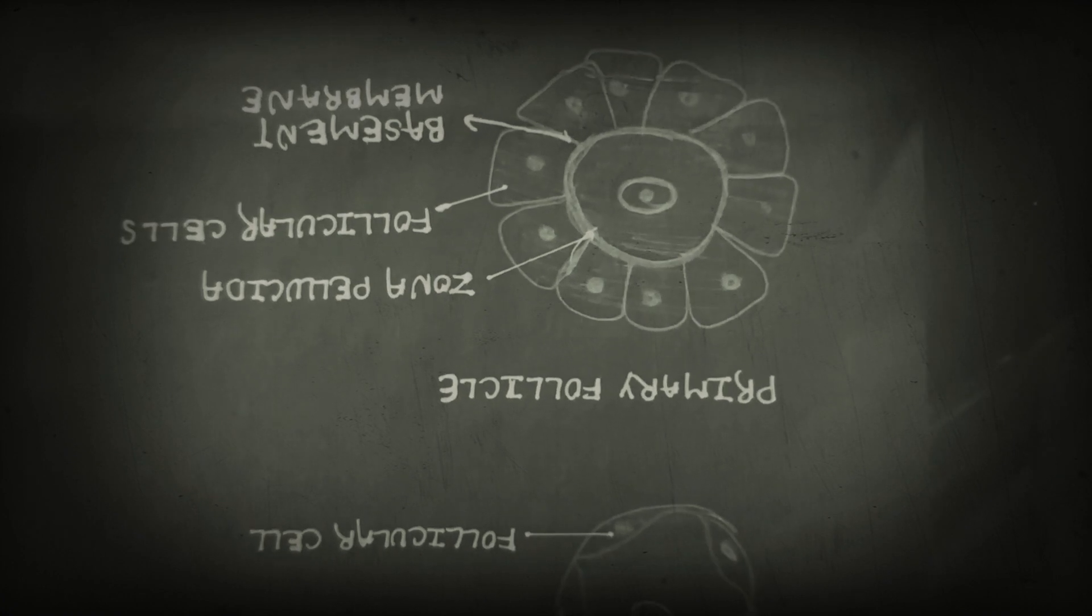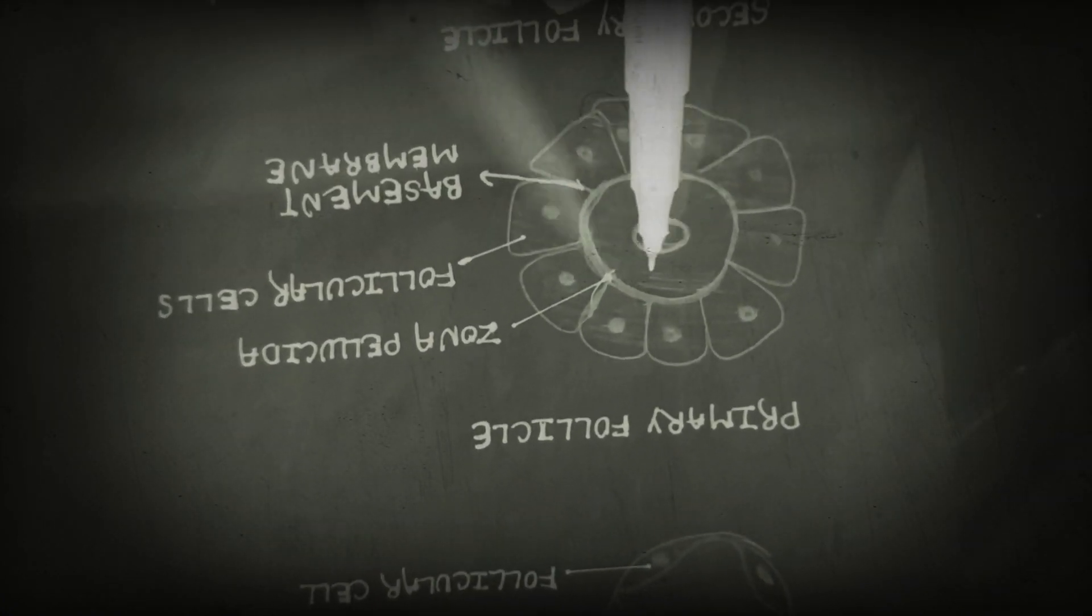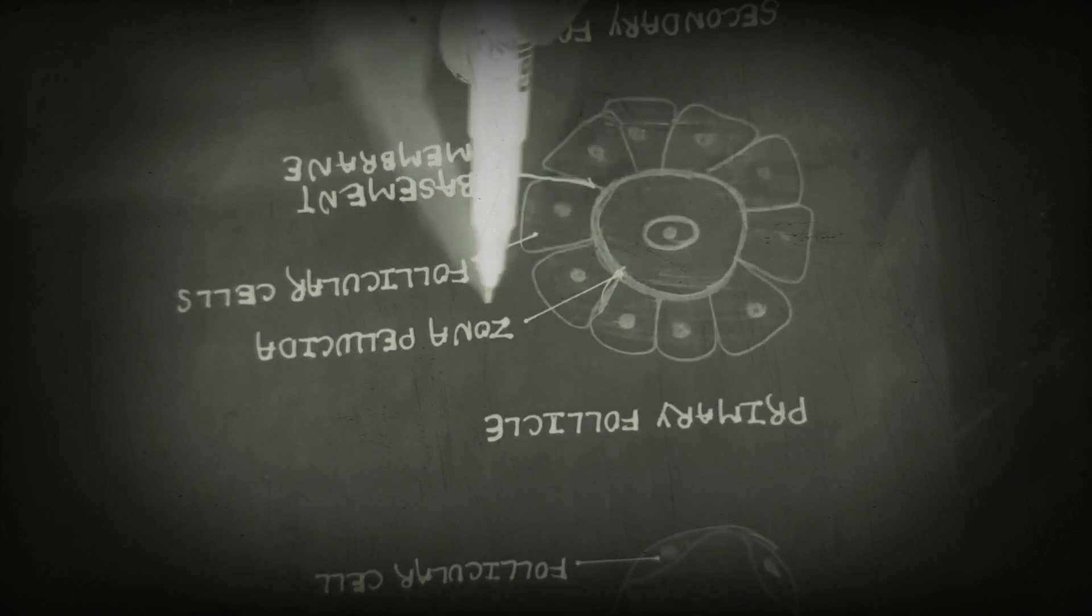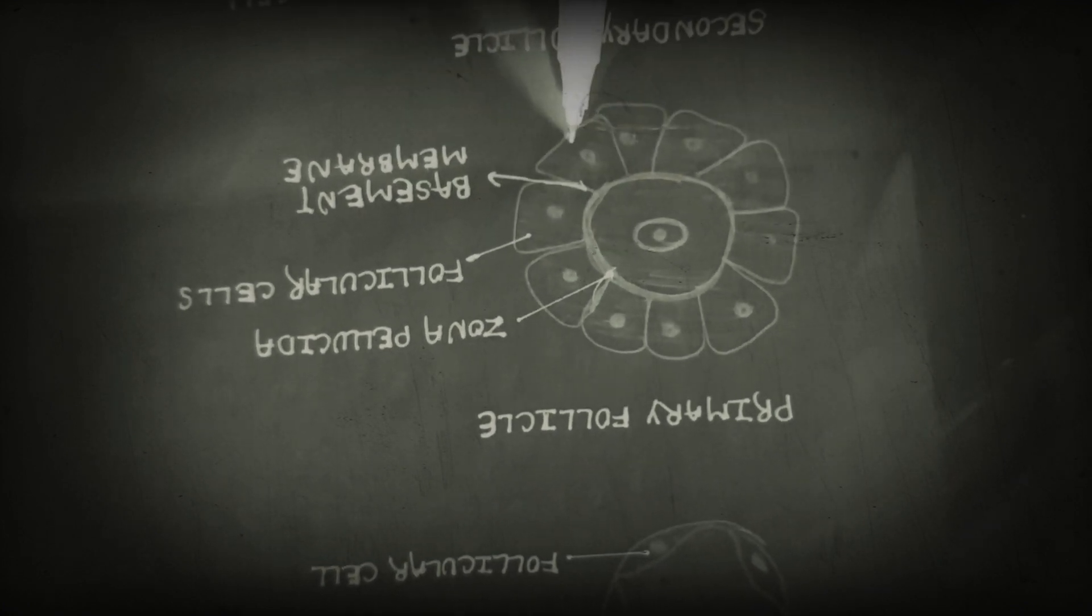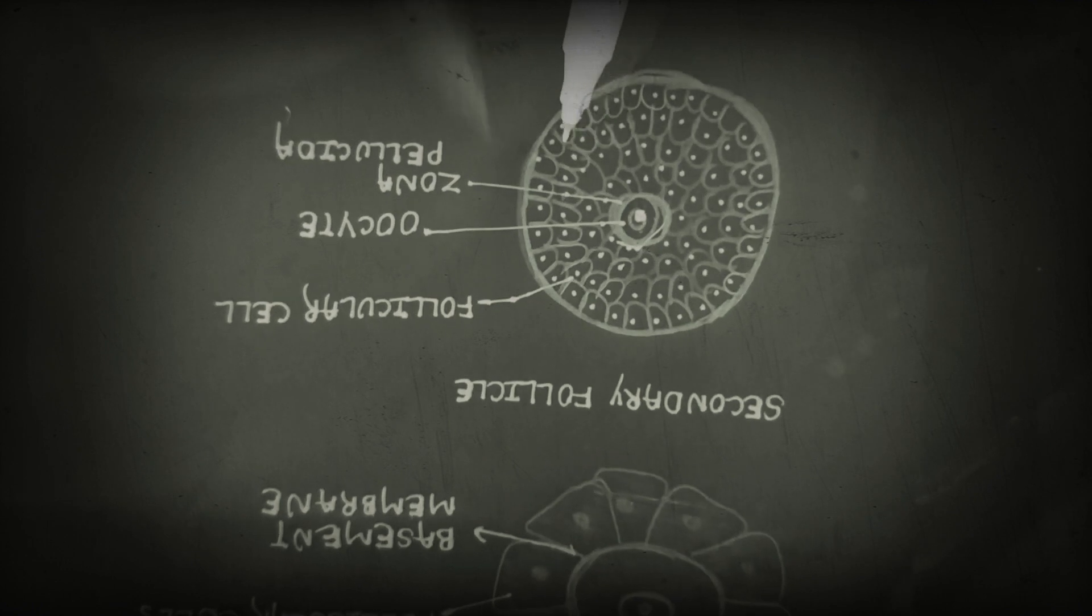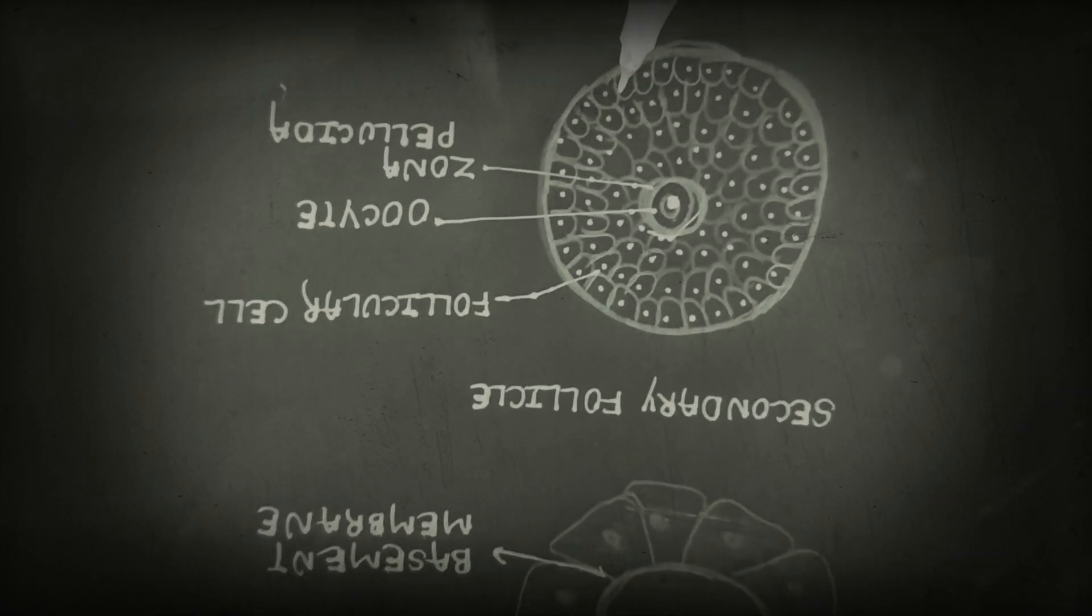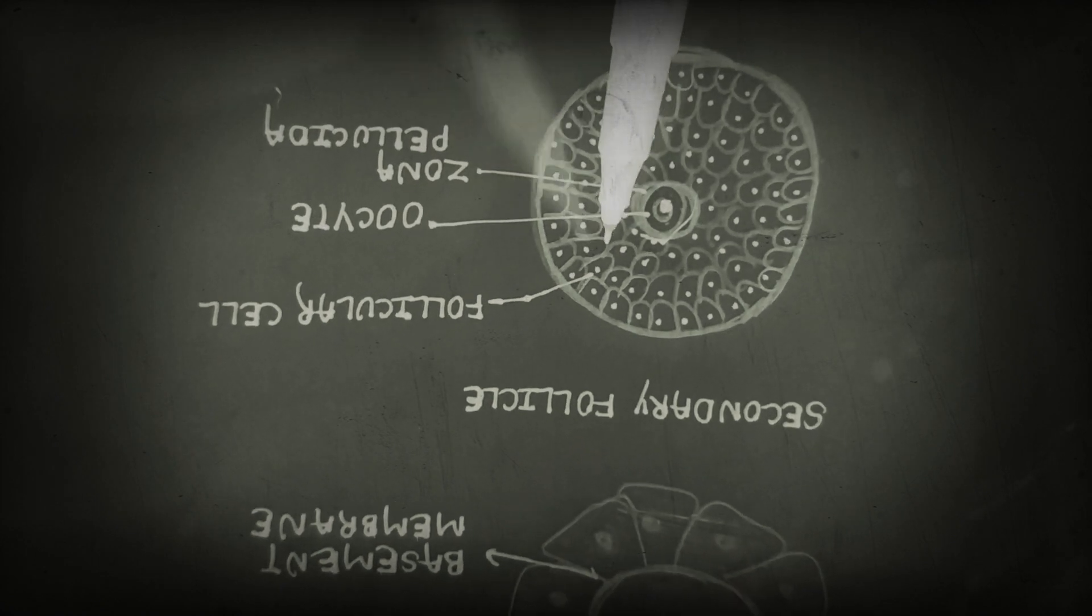After going through meiosis I, we discuss secondary follicles. When primary follicles rapidly divide, they become secondary follicles. Secondary follicles are made of congested follicular cells, zona pellucida, and oocytes.